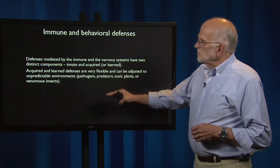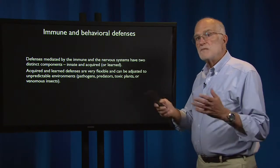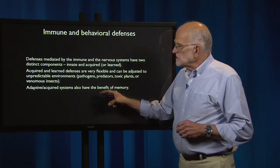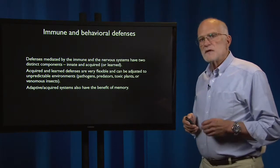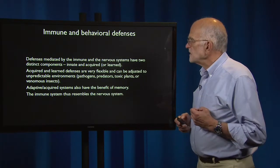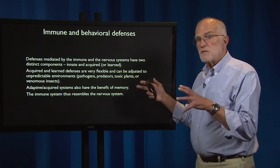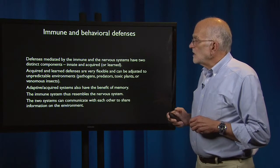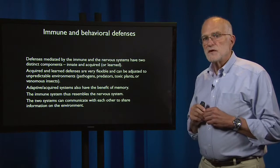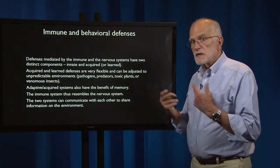The kinds of things that are unpredictable are pathogens, predators, toxic plants, and venomous insects. Adaptive and acquired systems also have the benefit of memory — we have both neurological memory and immune memory. The immune system thus resembles the nervous system in some important ways. We also know that the two systems can communicate with each other to share information on the environment; there is cross-talk between the immune system and the central nervous system.